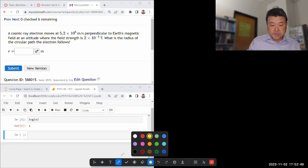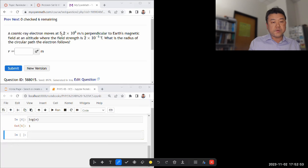All right, so this question says that a cosmic ray electron moves at some speed perpendicular to Earth's magnetic field.